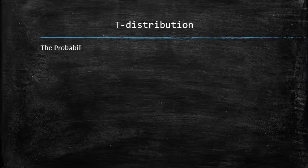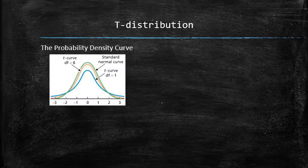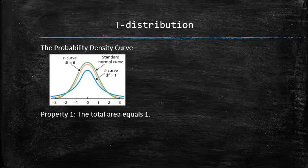The probability density curve of a t-distribution looks a lot like the standard normal probability density curve and it has the following properties. Property number one, the total area of course is equal to one.